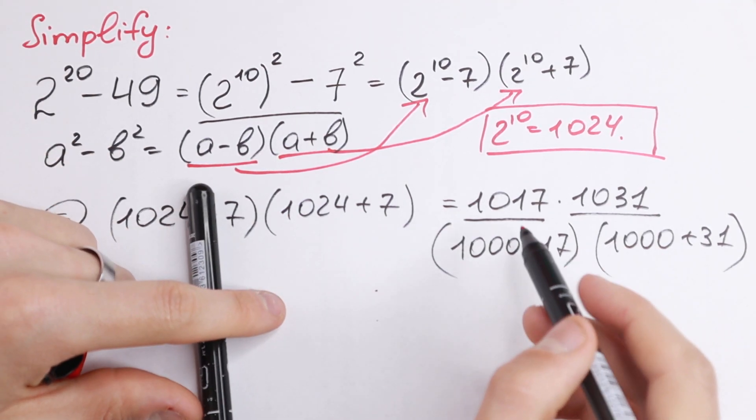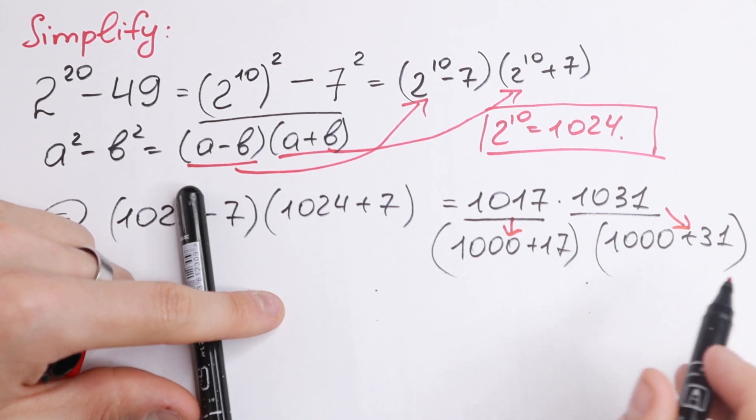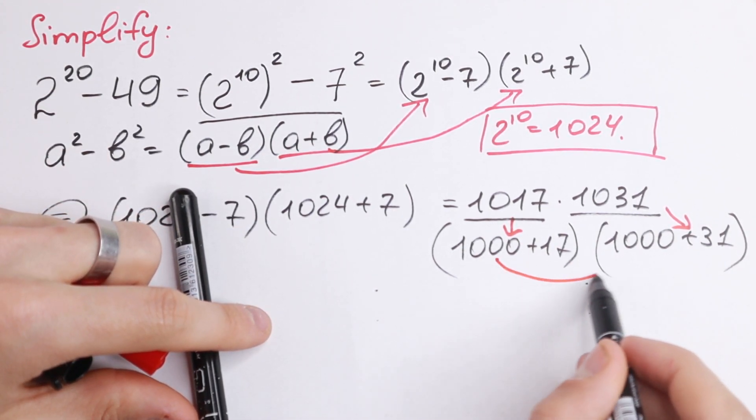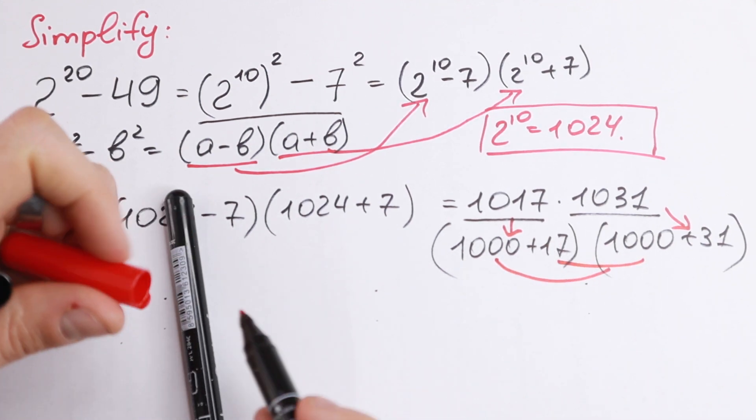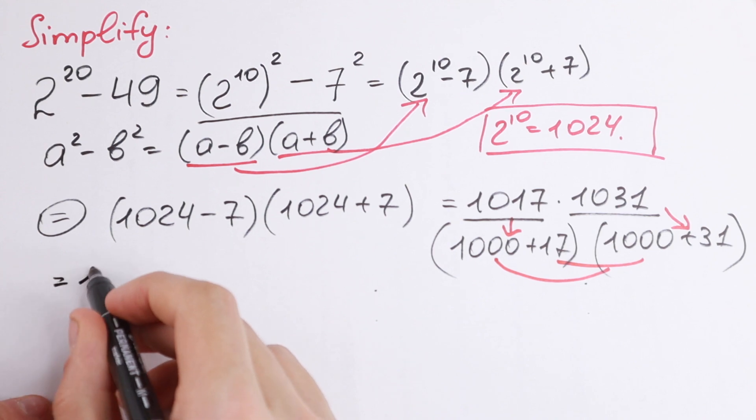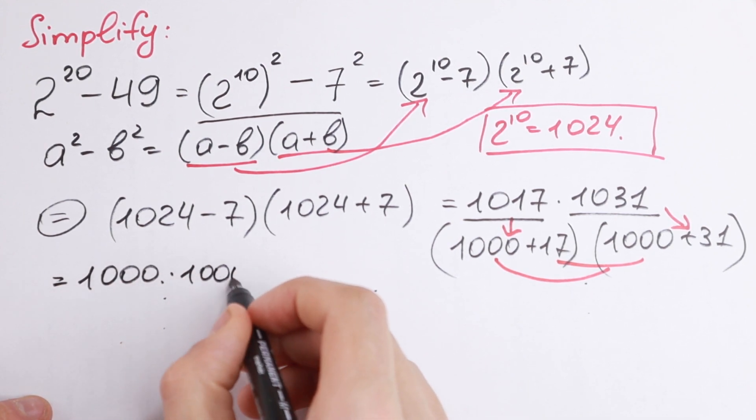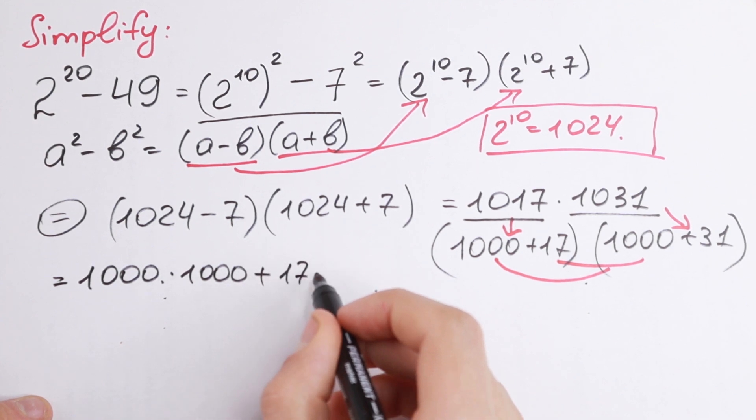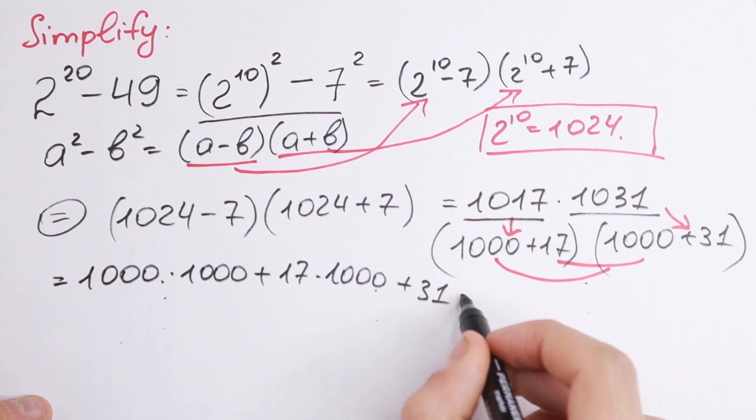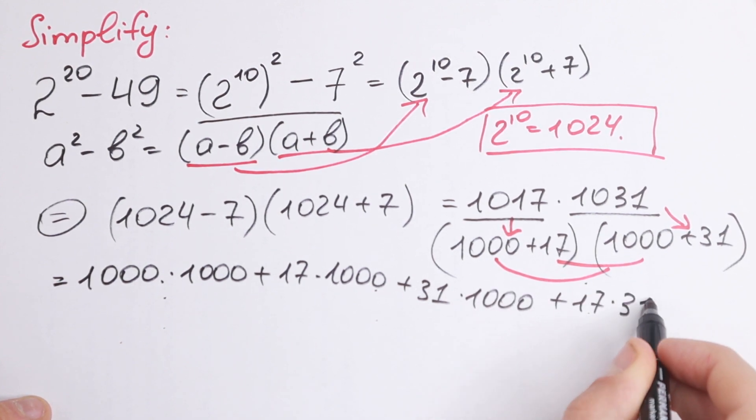So as you can see, we change this 1031 by this element and this by these parentheses. And now we need to multiply parentheses by parentheses. Firstly this 1000 to these parentheses and secondly 17 by these parentheses. What we will have? We will have firstly 1000 times 1000 plus 17 times 1000 plus 31 times 1000 and plus 17 times 31.